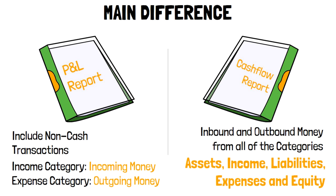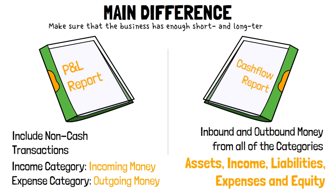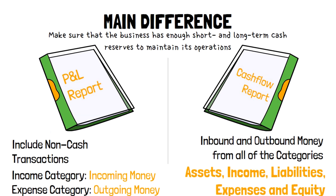So in a sense, it's a measure of all inflowing cash to the business and all outbound cash from the business for a given period of time. The purpose of it is just to make sure that the business has enough short and long-term cash reserves to maintain its operations. Together, the profit and loss report and the cash flow report address the question of financial efficiency of the operations of the business.